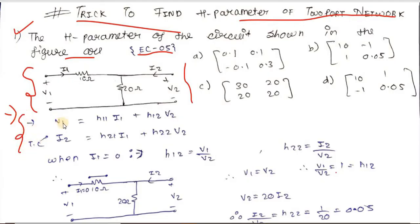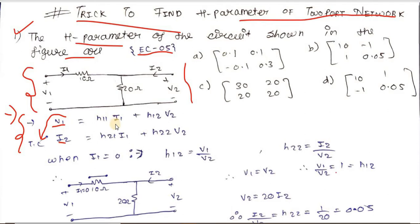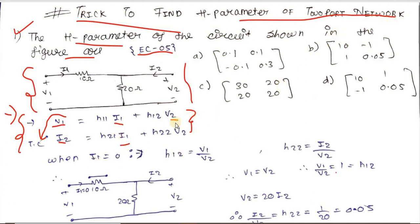For h-parameter, the left-hand side has v1 and i2, and we use the priority trick: the input parameter comes first. Since v1 and i2 are on the left, the remaining input parameter i1 comes first, then v2. To get h11, h12, h21, and h22, we first make i1 = 0, then make v2 = 0.